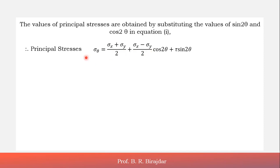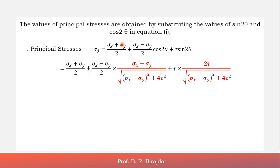We substitute the values of sin 2θ and cos 2θ into equation number 1: σθ = (σx + σy)/2 + (σx − σy)/2 · cos 2θ + τ · sin 2θ. Substituting the cos 2θ value gives (σx − σy)/2 times (σx − σy)/√[(σx − σy)² + 4τ²], and then ±τ times 2τ/√[(σx − σy)² + 4τ²].